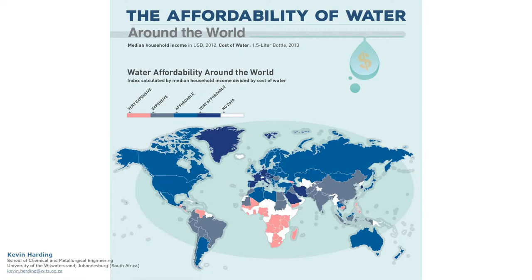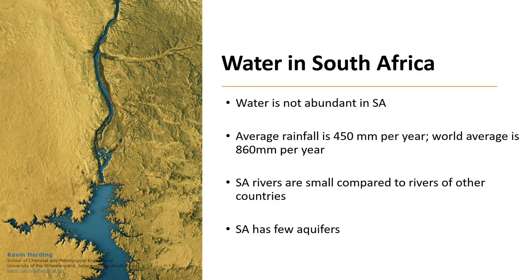South Africa is no exception to the continent. In South Africa, water is not abundant, with an average rainfall that is just over half the world's average. We have very few rivers or aquifers, no natural lakes, and it is not uncommon to have frequent droughts.